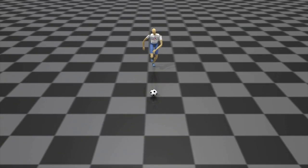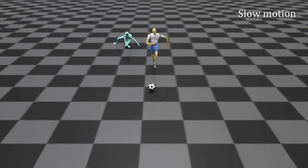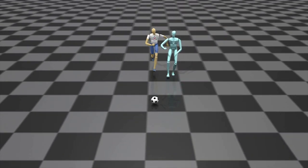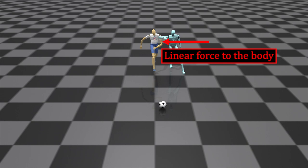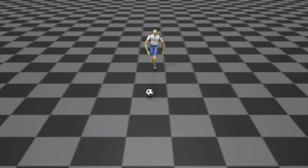Dribbling forward against external forces. We give a linear force to tackle the character's foot and to push the upper body. The character can balance itself against external forces while maintaining the dribble motion.